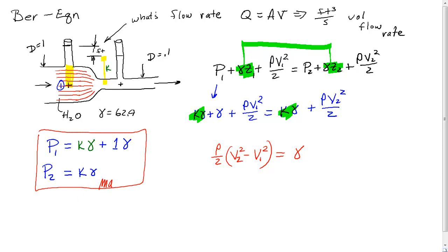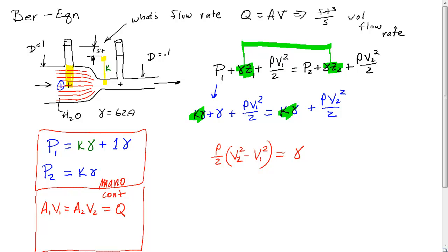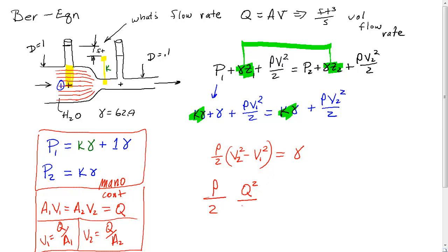Now we need the relationship between V1 and V2, so we use continuity: A1·V1 = A2·V2 = Q. We can express V1 = Q/A1 and V2 = Q/A2, then substitute back. After rearranging, we get Q²/A2² − Q²/A1² = γ, which gives Q²·(1/A2² − 1/A1²) = γ.